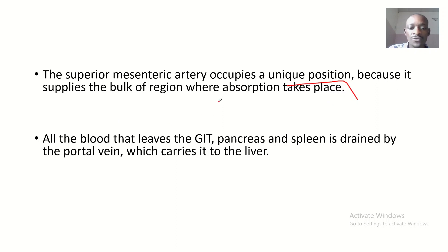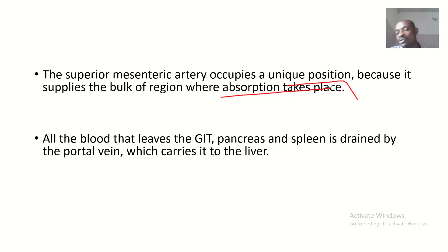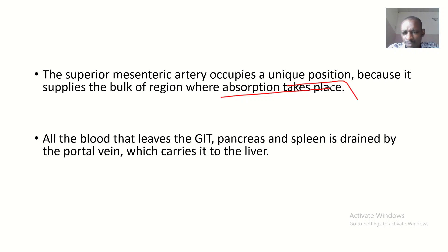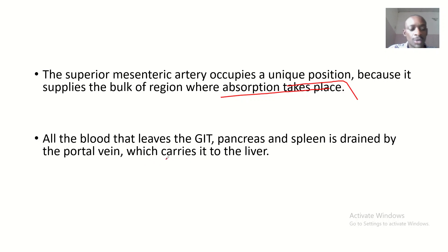The superior mesenteric artery occupies a unique position because it supplies the region where absorption takes place — the small intestine. Since absorption occurs there, there must be sufficient blood supply to deliver oxygen and nutrients. That is why the superior mesenteric artery holds such an important role.